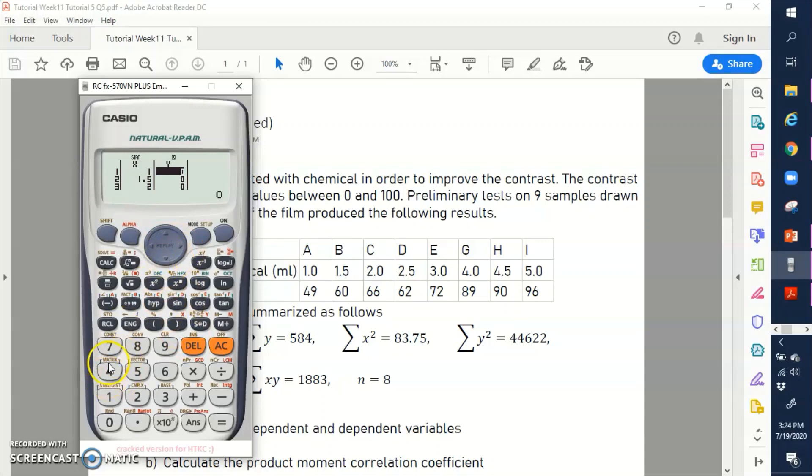So next, let's go to y. So I have 49, 60, 66. So you can just fast forward this video if you think that this is taking your time away. 72, 88, 89, 90 and the last data is 96. Okay, right. So I have successfully input both data x and data y into the calculator and now I'm gonna click on AC.